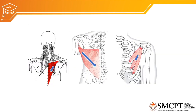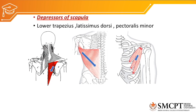What are the depressors of the scapula? The depressors are the lower trapezius, latissimus dorsi, and pectoralis minor. The lower trapezius originates from T2 to T12 of the thoracic vertebrae and inserts into the spine of the scapula. When it contracts it creates a downward pull of the scapula. The latissimus dorsi pulls the scapula as well as the humerus downward and internally, originating from the thoracic and lumbar spine as well as the thoracolumbar fascia, with an attachment on the inferior angle of the scapula, inserting into the floor of the intertubercular sulcus.